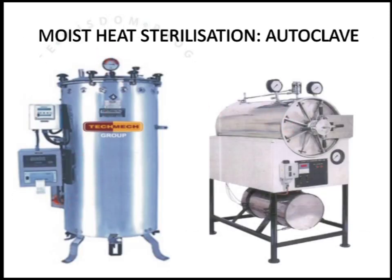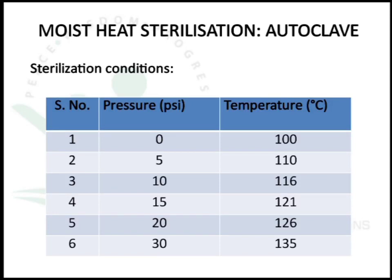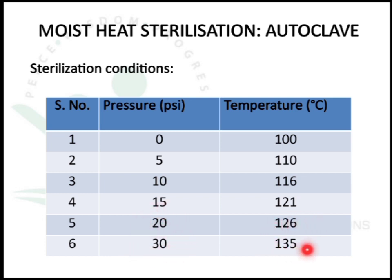By changing pressure inside the autoclave, we can increase the sterilization temperature. At zero or atmospheric pressure, the temperature is 100°C. At 5 psi, it rises to 110°C; at 10 psi, to 116°C; at 15 psi, to 121°C. The usual sterilization condition is 15 psi at 121°C for 15 to 20 minutes. At 20 psi, temperature increases to 126°C, and at 30 psi, to 135°C.